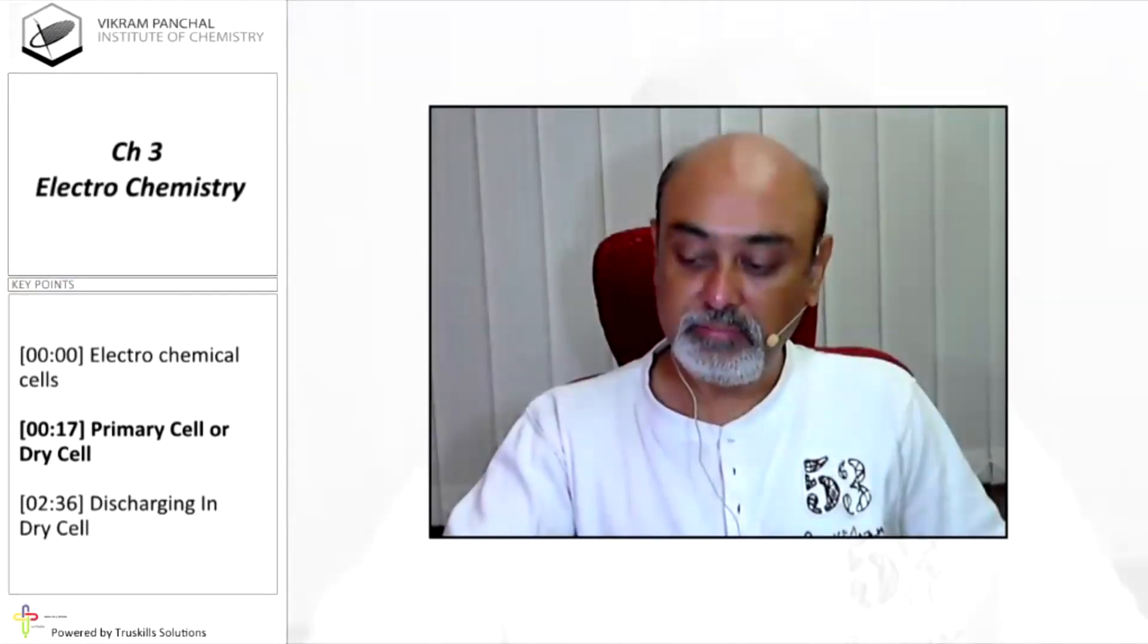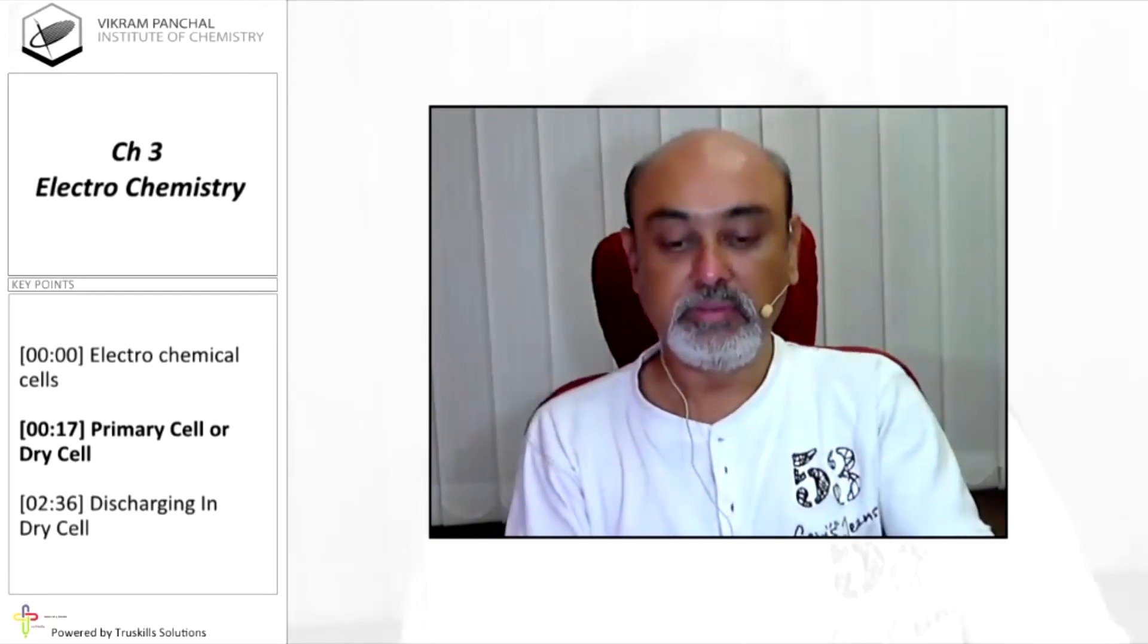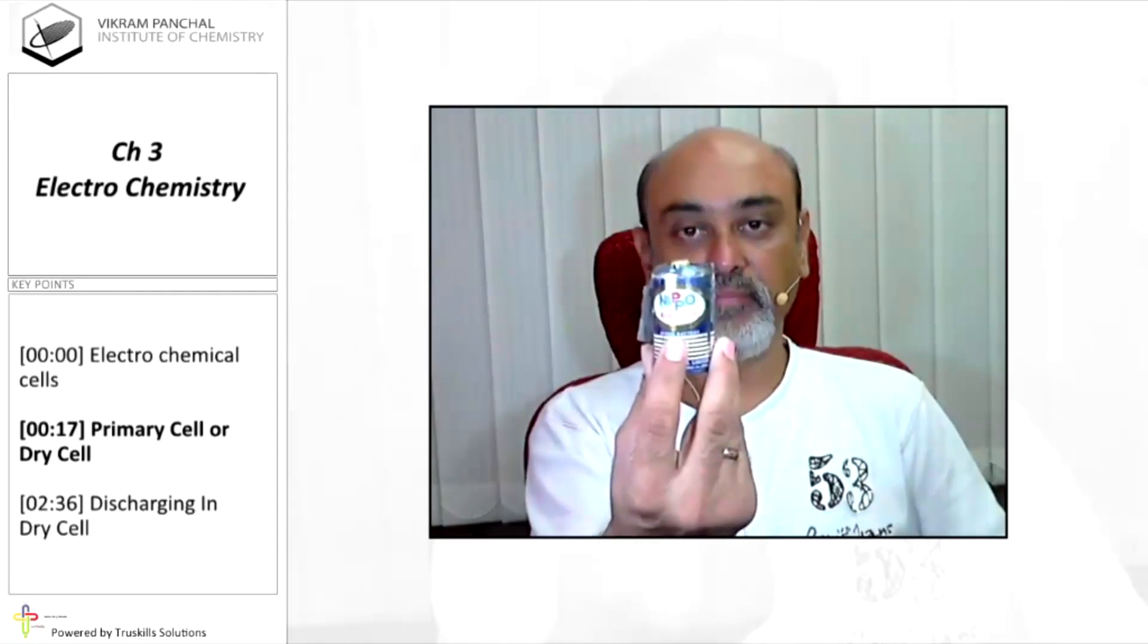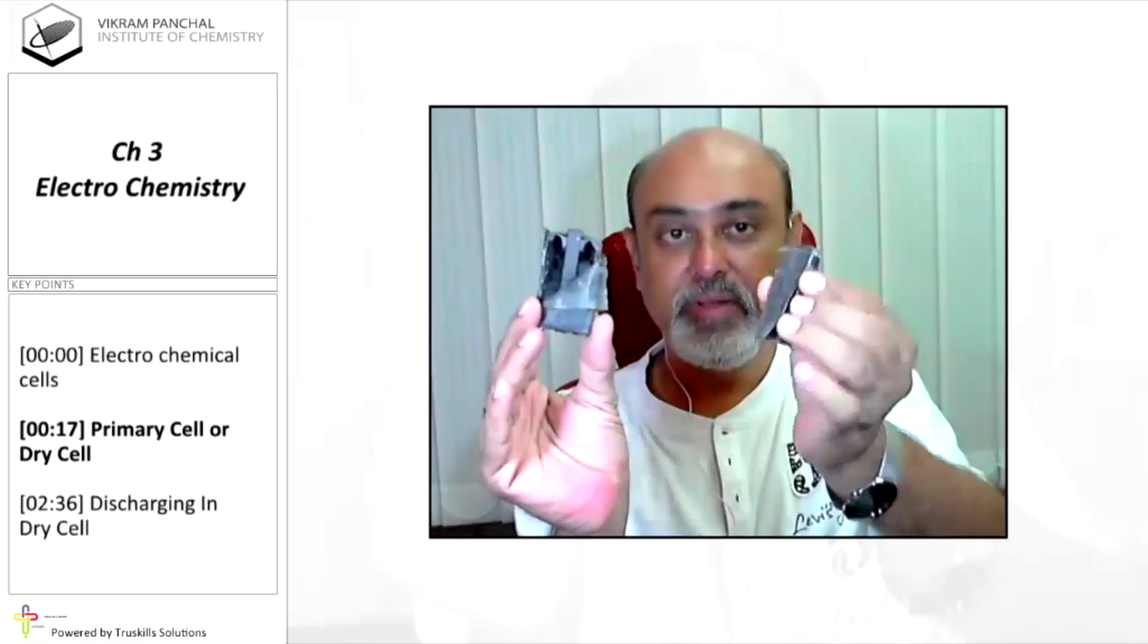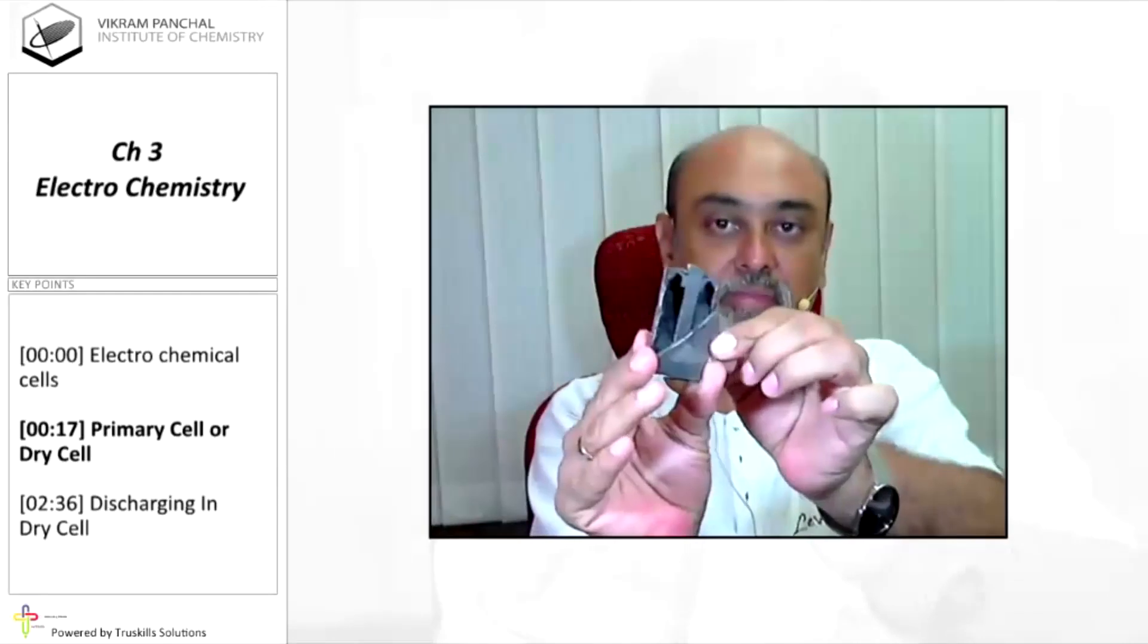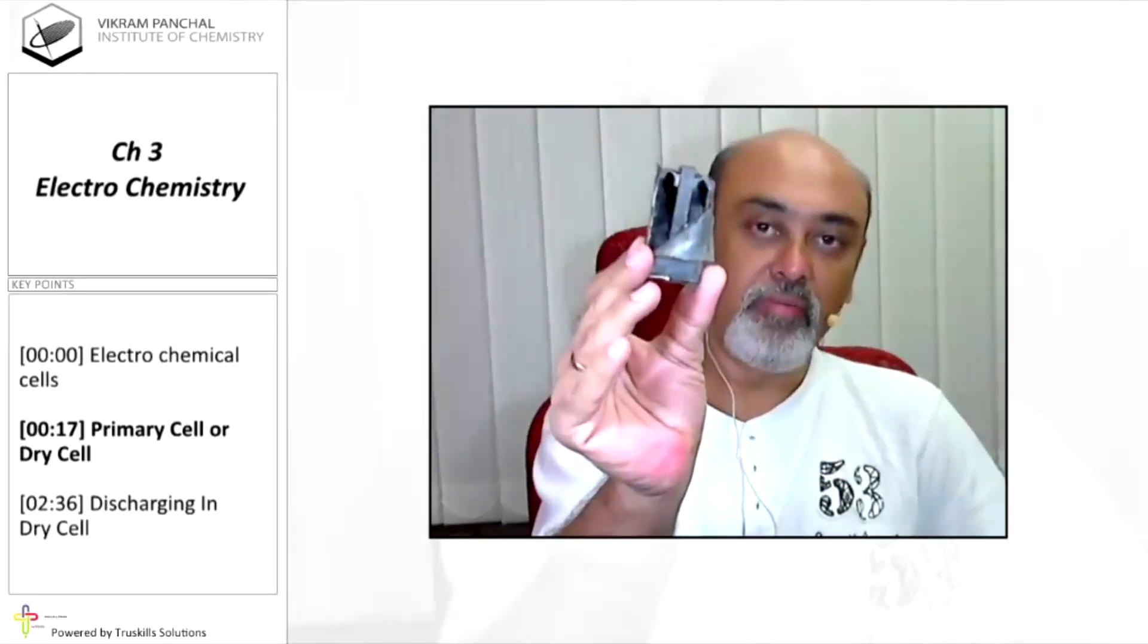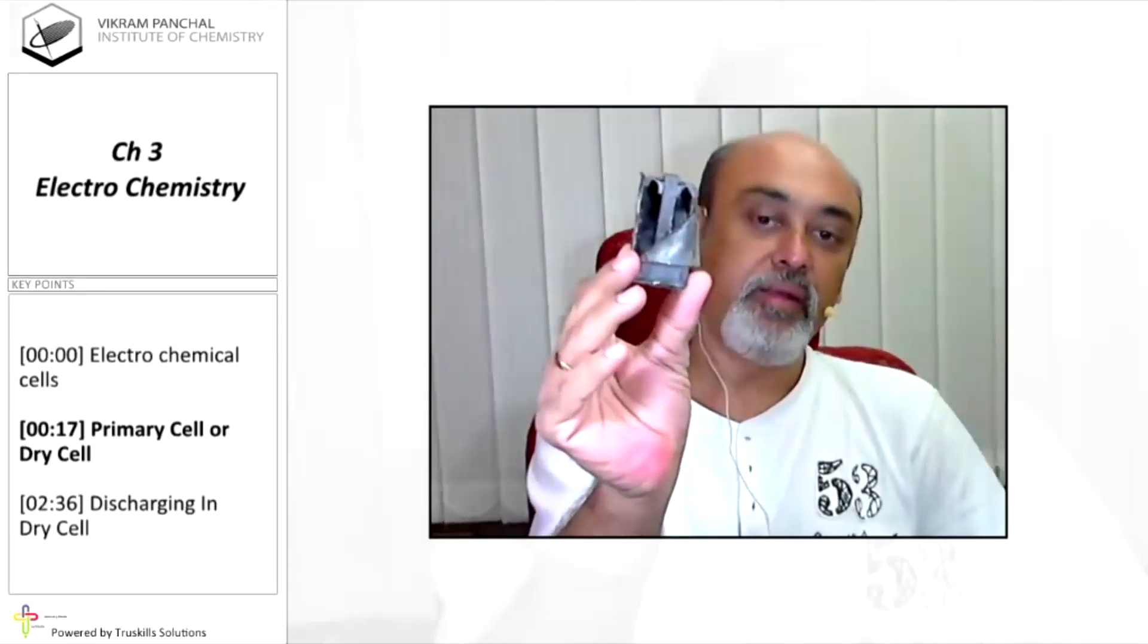I can show you dry cell. If you divide it or if you cut it, you will get these two compartments of dry cell. And in this compartment you can see there will be a rod of graphite and around graphite you will find black powder which is of MnO2 and graphite.